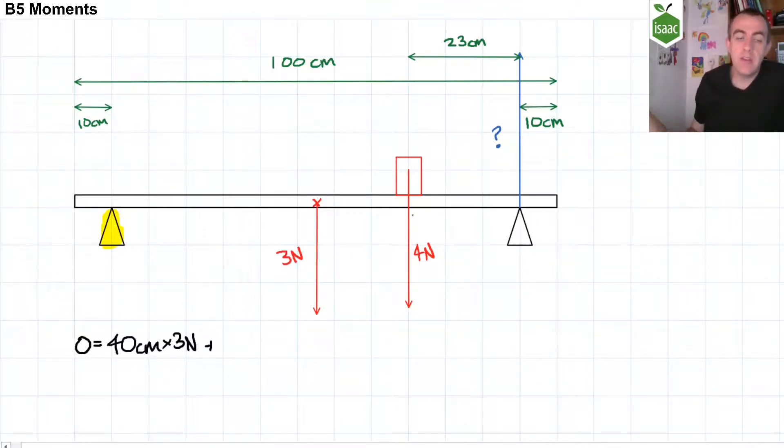Now we have to add that to the perpendicular distance between the pivot and the line of action the four newton force multiplied by the four newton force. If the weight is 23 centimetres away from the right-hand support, then it is 57 centimetres away from the left-hand support. So that is 57 centimetres multiplied by four newtons.